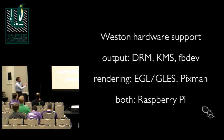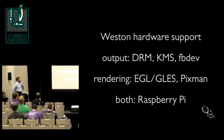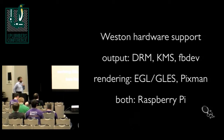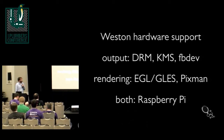Weston supports all the standard framework. It's best supported on DRM with kernel mode setting. There is also an FBDev backend, but it only supports software rendering. In terms of rendering, it supports OpenGL ES and Pixman for software rendering. Raspberry Pi is an example of something that combines output and rendering and is extremely flexible. I haven't yet seen graphics hardware that we couldn't easily model in Weston without any horrible special cases.